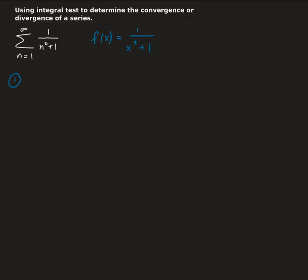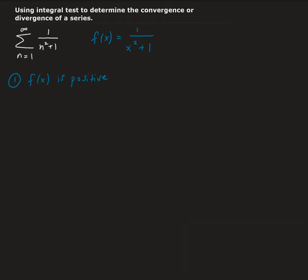The function is positive, particularly for the interval we're interested in, going from 1 to infinity. If you look at the denominator, this is going to give us a positive value for all x. So f of x is positive for x greater than or equal to 1.